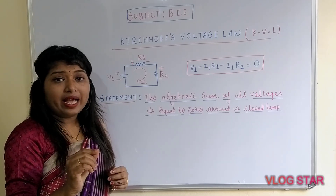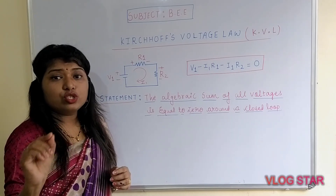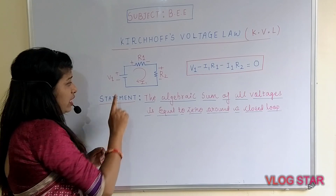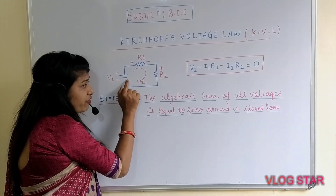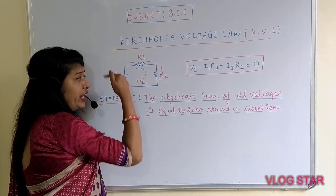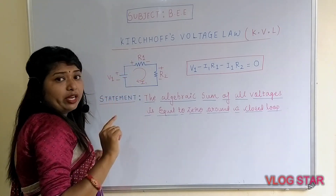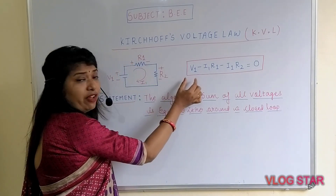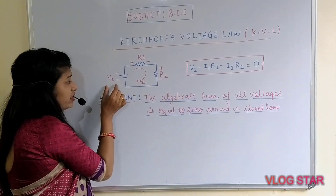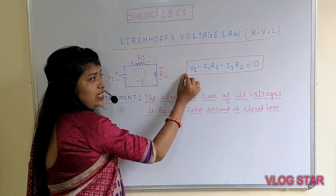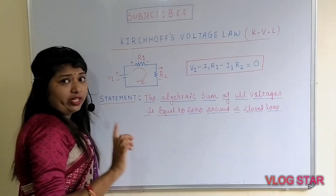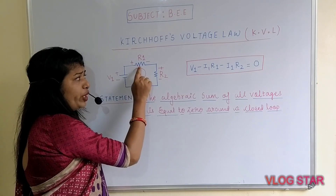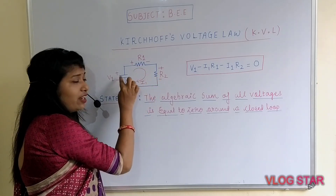Now you have to apply Kirchhoff's Voltage Law for this circuit. Starting with the second sign convention: as you can observe, if we go from the negative terminal of the battery to the positive terminal there will be a rise in potential, so the EMF is positive. Here the EMF value is V1, so you consider positive V1.